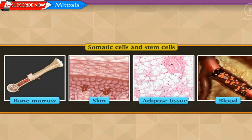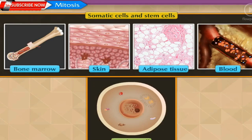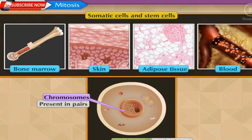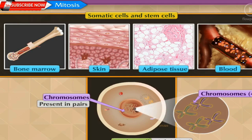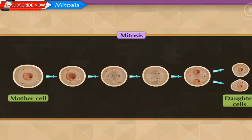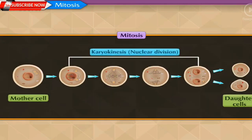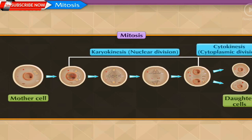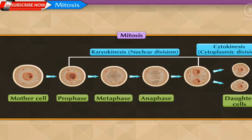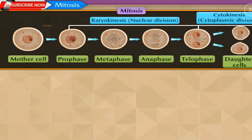Mitosis: somatic cells and stem cells divide by mitosis. The mother cell which undergoes division is 2N (diploid), meaning chromosomes are in pairs. Before division, chromosomes are duplicated and their number is doubled to 4N. The whole process of mitosis is completed through two main steps: karyokinesis (nuclear division) and cytokinesis (cytoplasmic division). Karyokinesis is completed through four steps: prophase, metaphase, anaphase, and telophase.